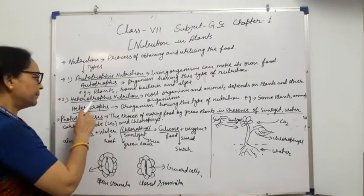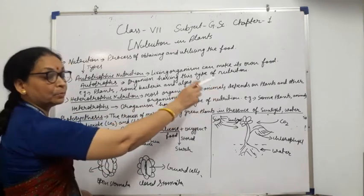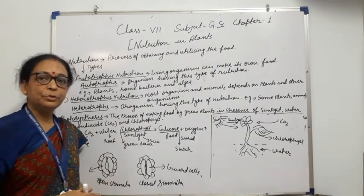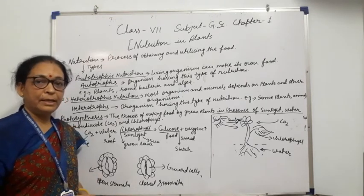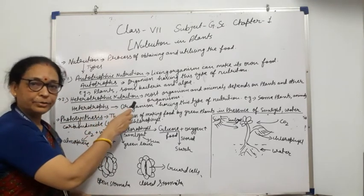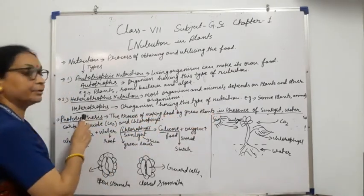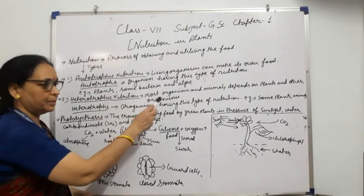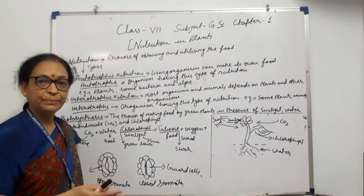The next type is heterotrophic nutrition. Most organisms and animals depend on plants and other organisms for food. We call this heterotrophic nutrition, and organisms having this type of nutrition are called heterotrophs. For example, some plants and other organisms such as animals and human beings.